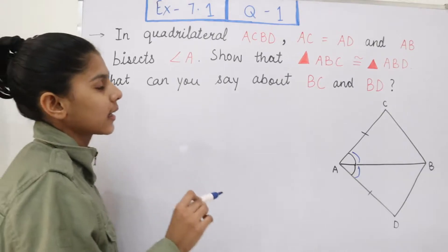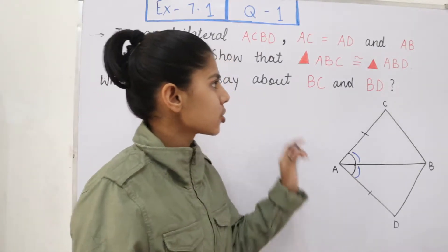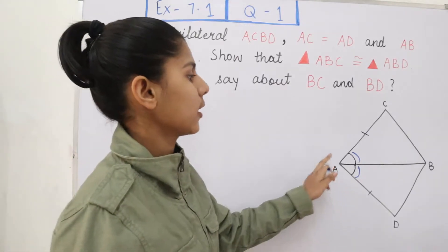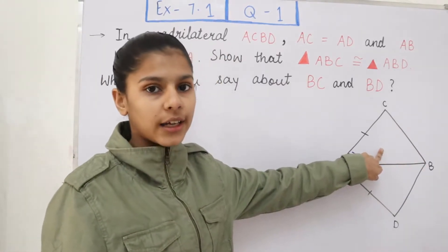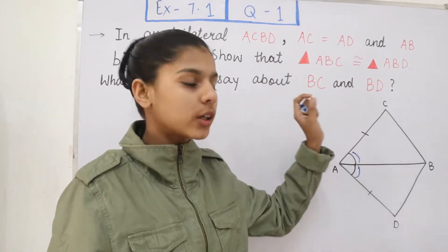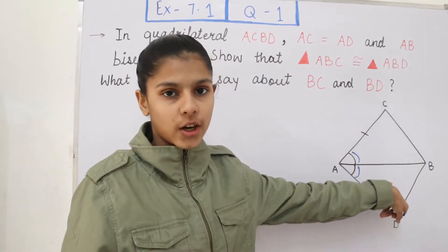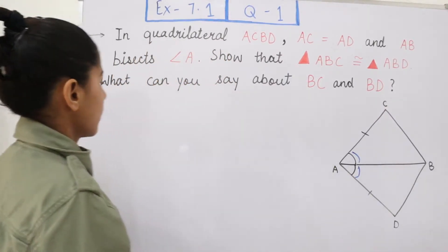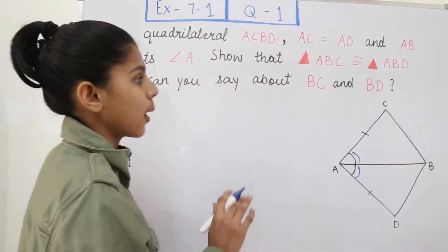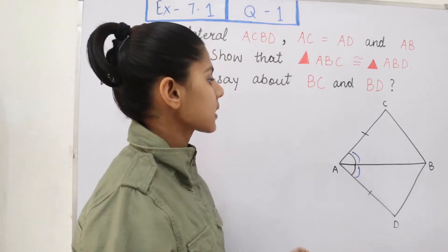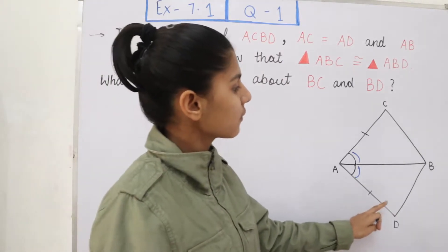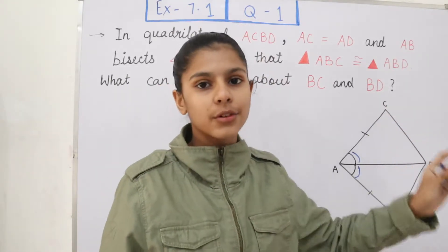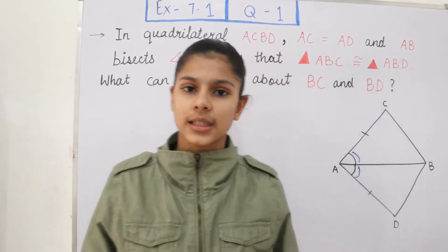We have to show that triangle ABC is congruent to triangle ABD — this upper triangle is congruent to the lower triangle ABD. So we have to prove both these triangles congruent. Then the question also asks: what can you say about BC and BD? We will first prove congruence and then discuss line segments BC and BD.